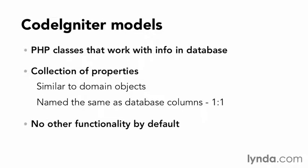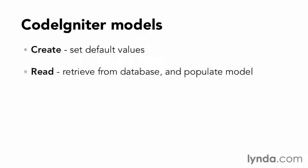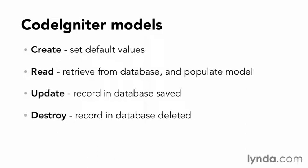Traditionally, the model is a class where common functionality can be defined, including Create, where something like a timestamp or other default values can be set; Read, where a record is retrieved from the database and used to populate the model; Update, where a record in the database is saved; and Destroy, where the record in the database is deleted. Create, Read, Update, Destroy is a common collection of functionality referred to by the acronym CRUD.